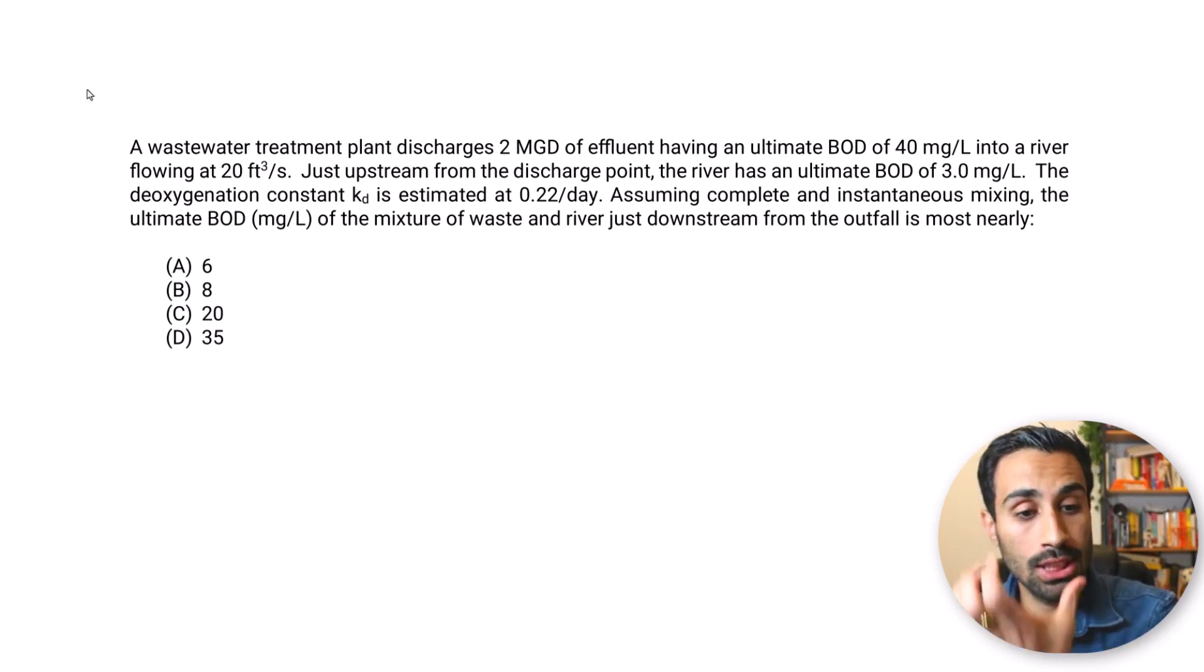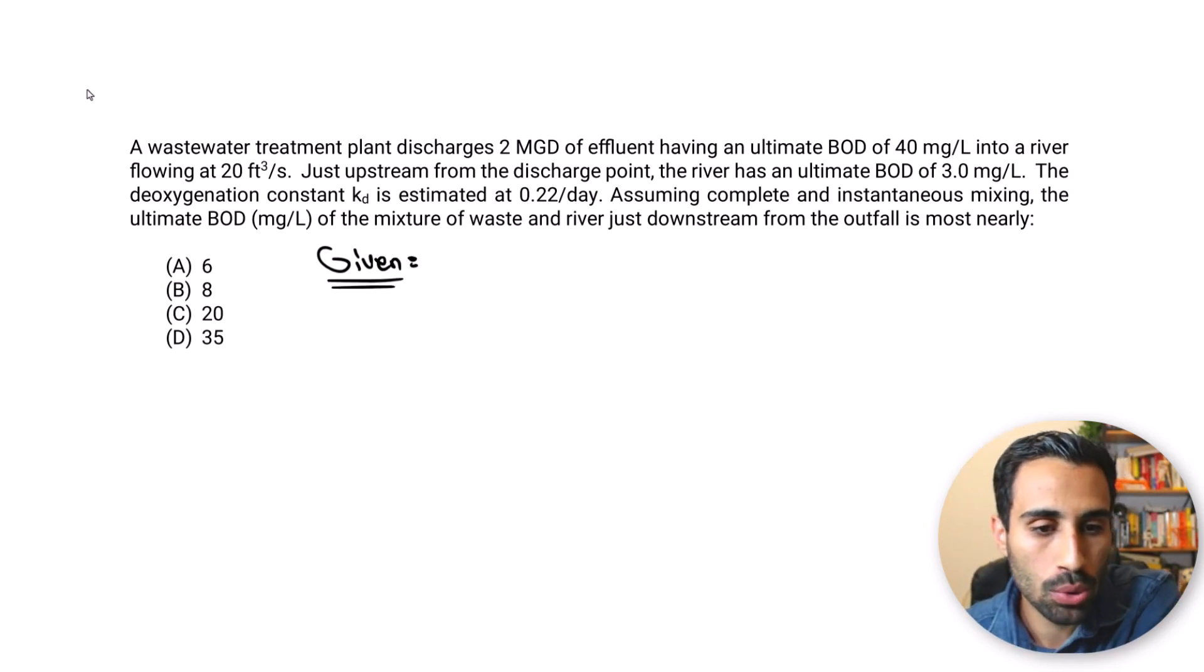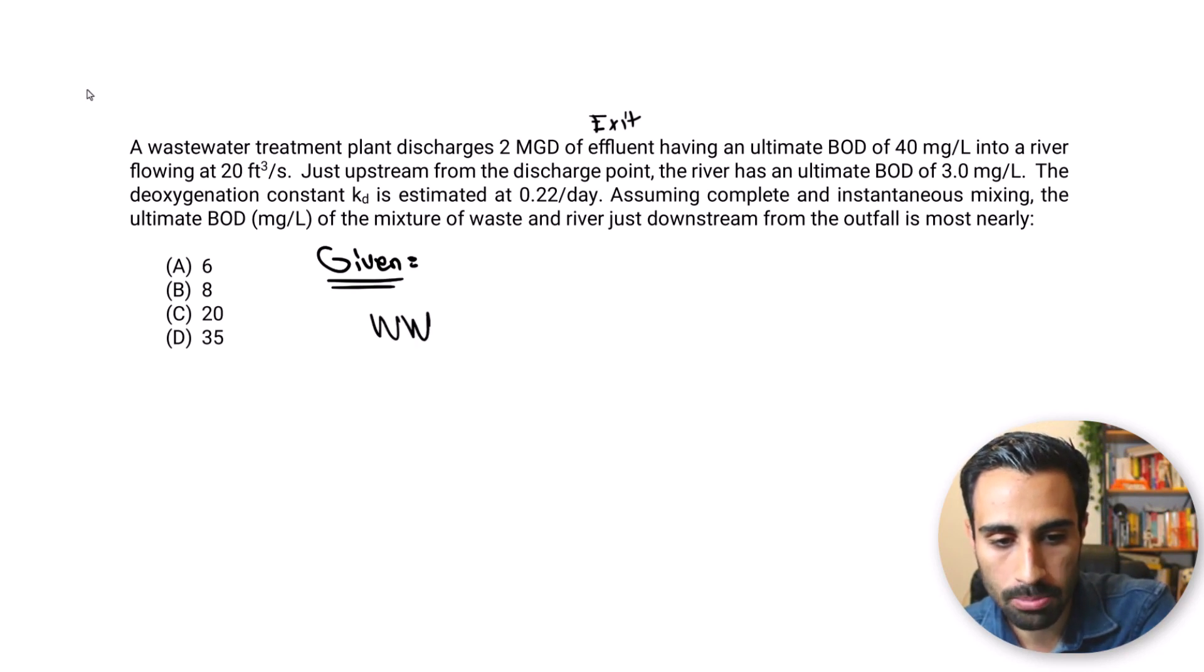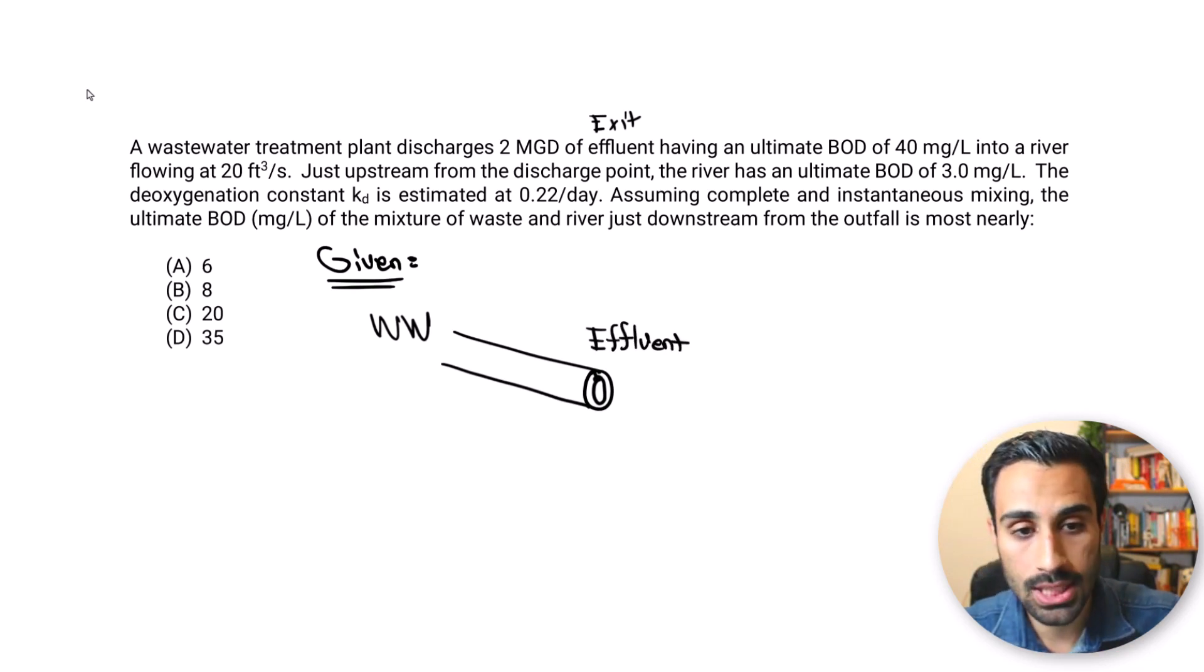I do want you to visualize this, maybe in your head or draw a picture. On paper is the best way. So we're going to start with the given and visualize that wastewater plant discharges effluent. Effluent means the exit of the pipe after the wastewater. So let's say we have a wastewater plant, and after that treatment, primary, secondary, then we exit at the effluent. So let's say this is my effluent pipe right here.